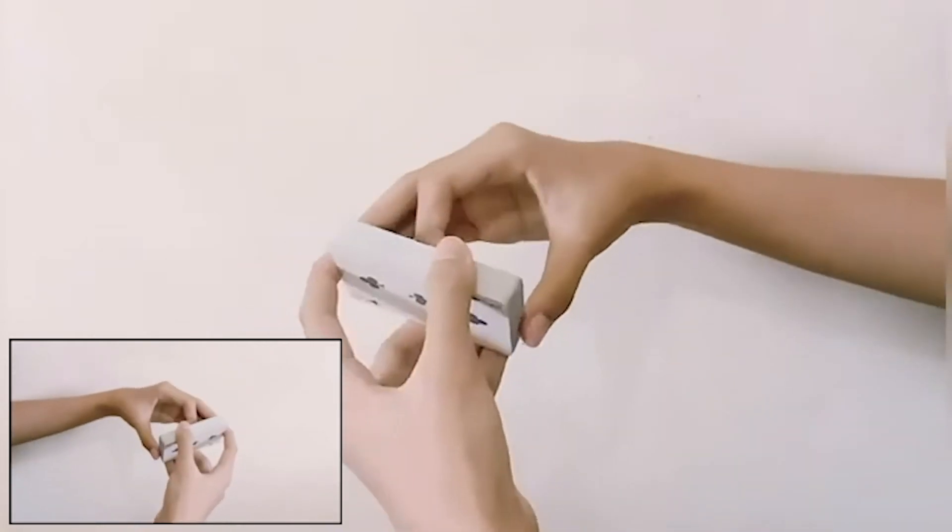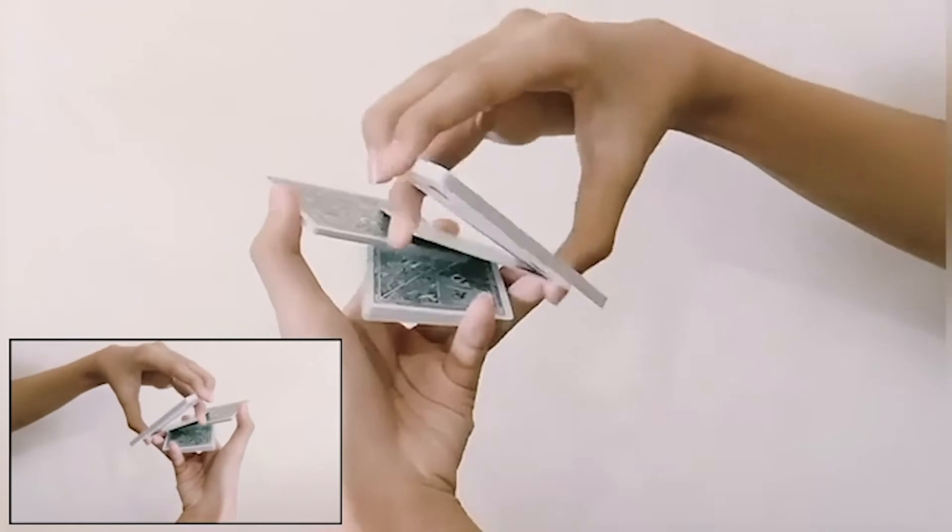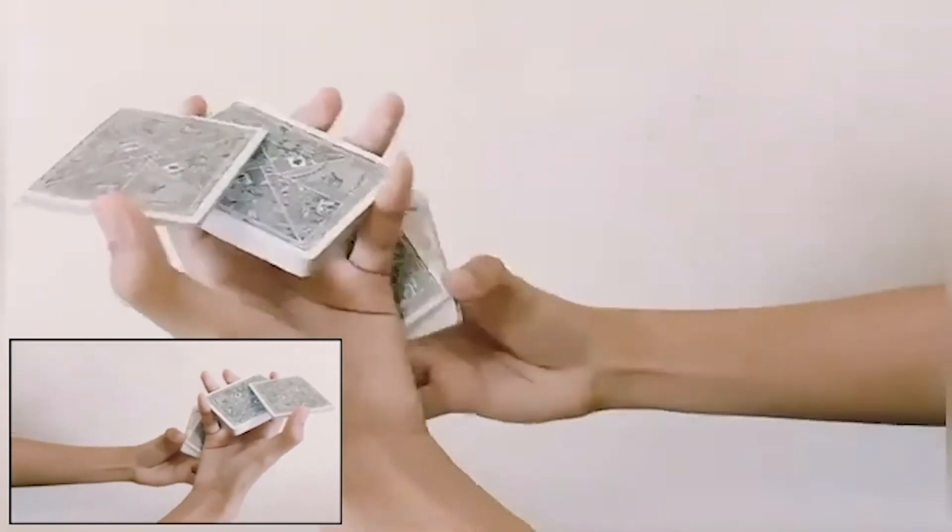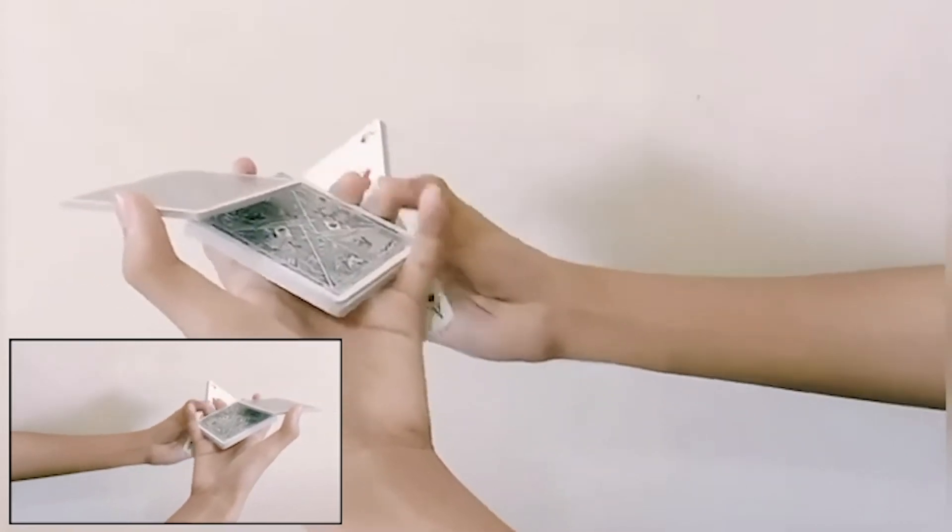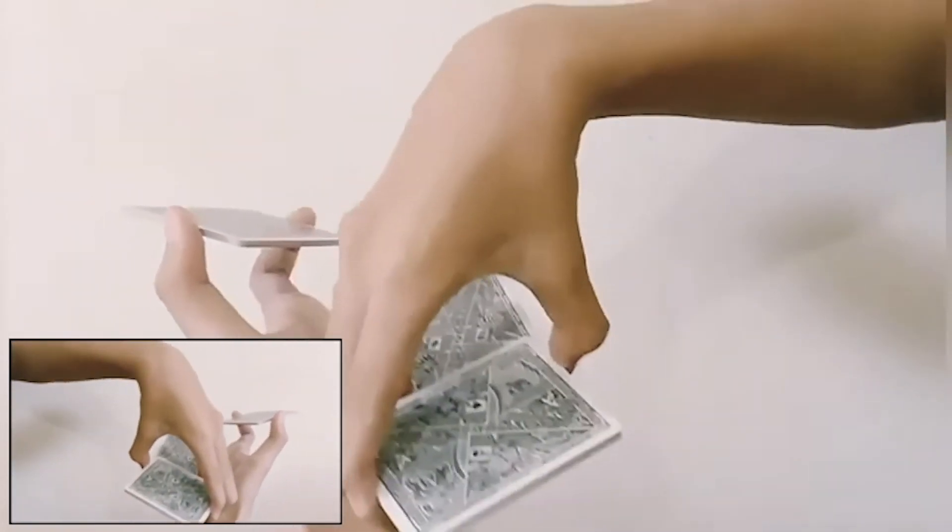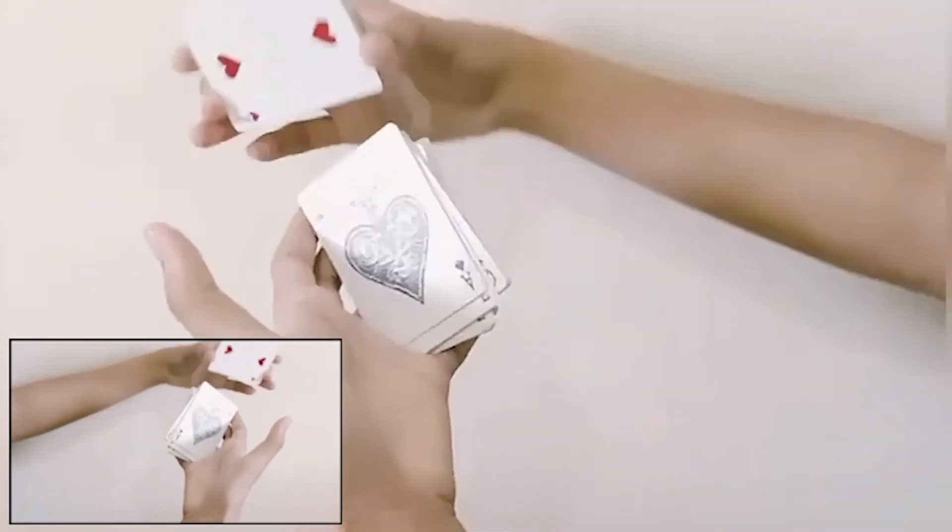Okay, one more time: Z-Grip, break the packet off, re-grip the position, rotate the packet, rotate the packet, execute scissor cut.